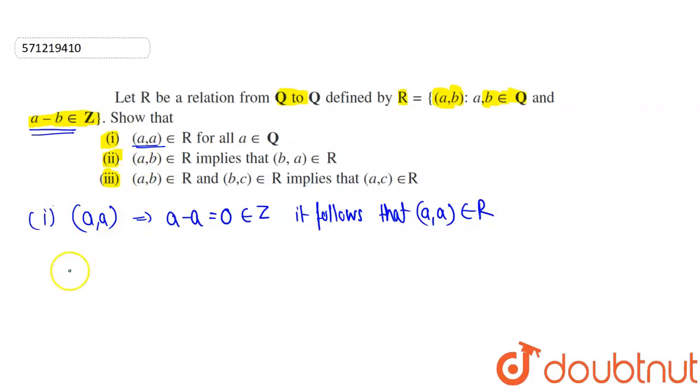Now in the second part, it is given that if (a,b) ∈ R, this implies (b,a) ∈ R. If I take (a,b) ∈ R, this implies that a-b belongs to an integer. According to this relation, b-a will also belong to an integer.